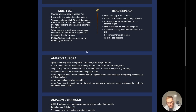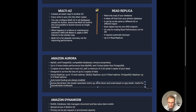Aurora supports read replicas — up to 15 if you use Amazon Aurora, up to five with MySQL replicas, and up to three with Postgres. Automated backups are always enabled for Amazon Aurora. There's also Aurora Serverless — a serverless database where clusters automatically start, shut down, and scale based on your application needs. It's very useful for unpredictable workloads or when you're starting a new application and don't know how much memory or compute you need.